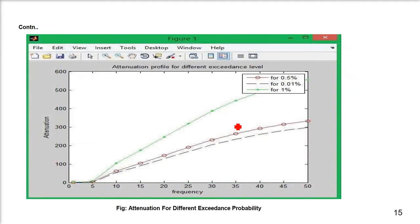These are attenuations for different exceedance probabilities. If somebody says that I want my link to be 99.99 percent available, for that we have different values: 0.5 percent, 0.01 percent, 1 percent. These are the attenuation profiles for different probability values or exceedance values.